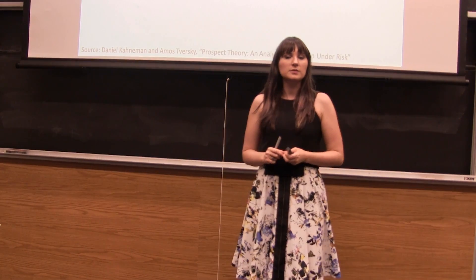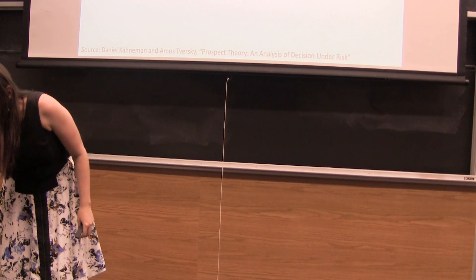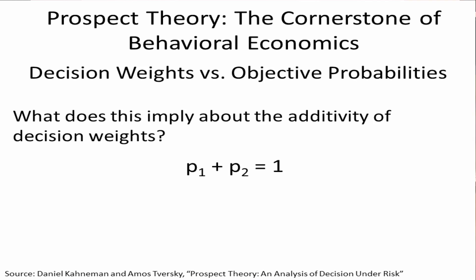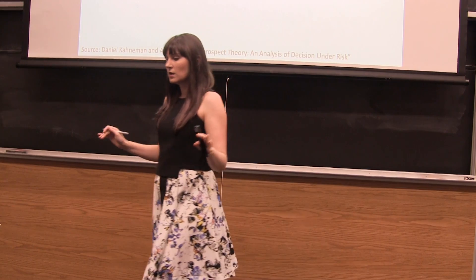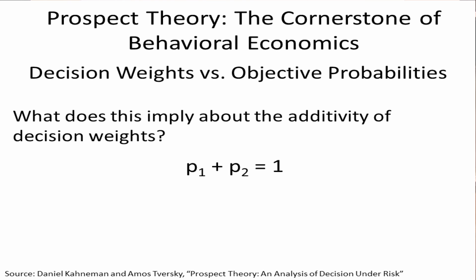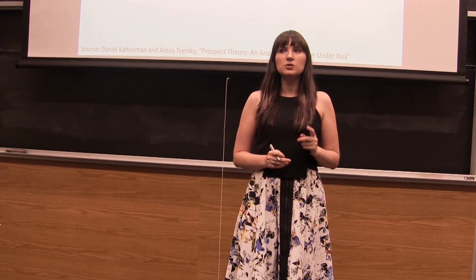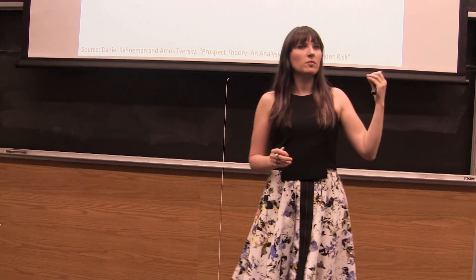This is an important thing we'll come back to that I want to make sure is not glossed over. Let's say we have a situation where P1 plus P2 equals one. If we only have two possible outcomes in the world, the probabilities of those outcomes have to add to one — like if you can only flip heads or tails on a coin, the probability of heads and tails have to add to one. But then we can ask ourselves, if we're thinking about the decision weights, what do these guys add to? In general, we don't really know, because we can no longer assume that just because the probabilities add to one, the sum of the decision weights will also add to one.